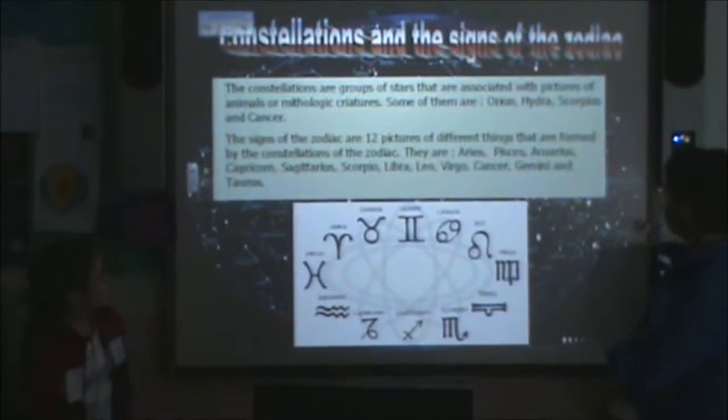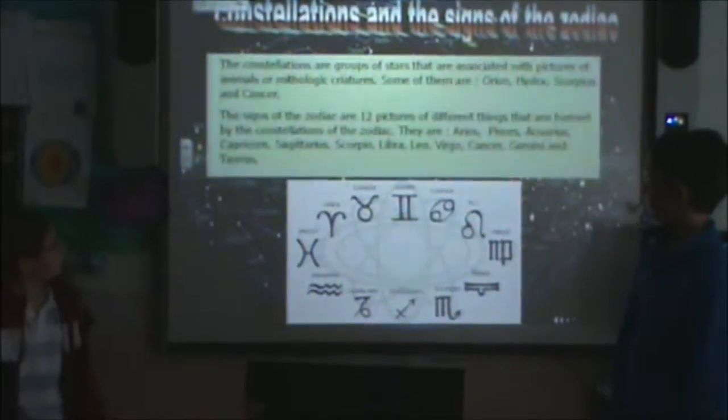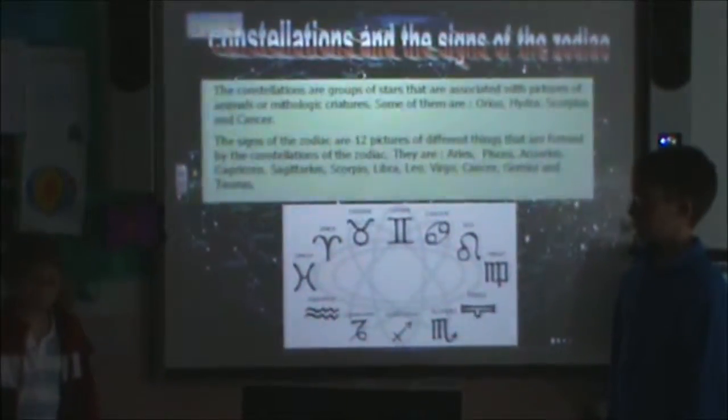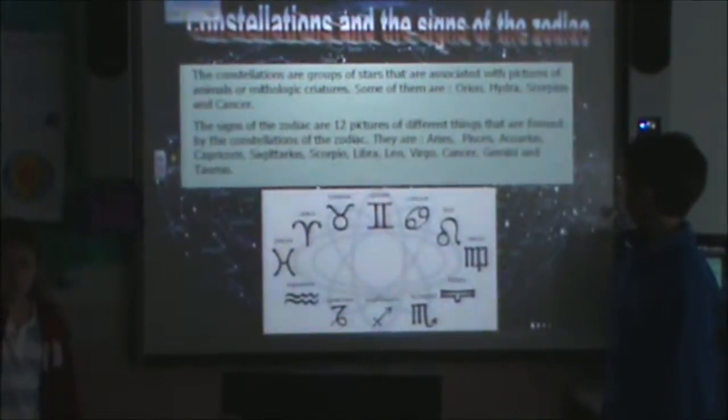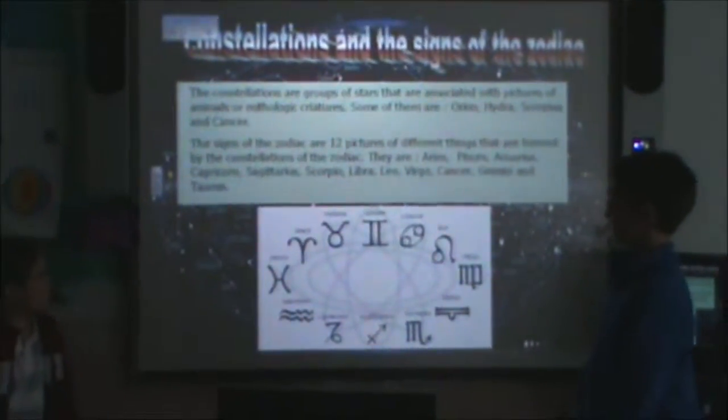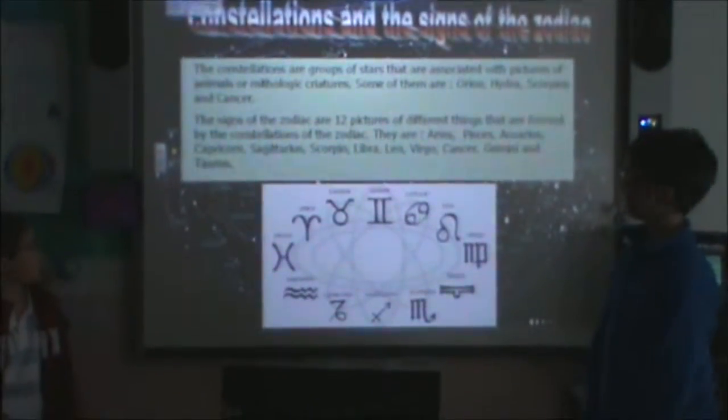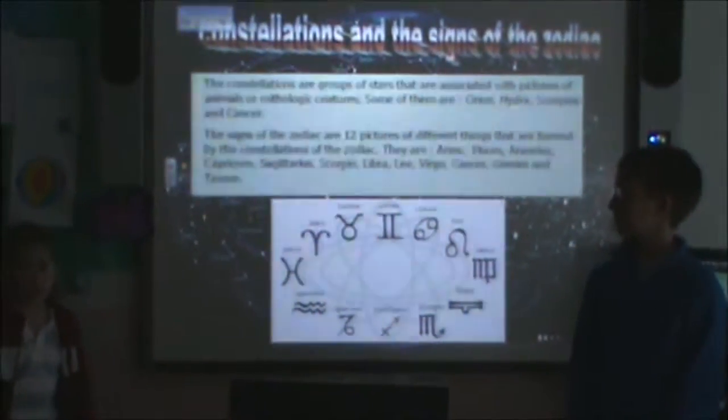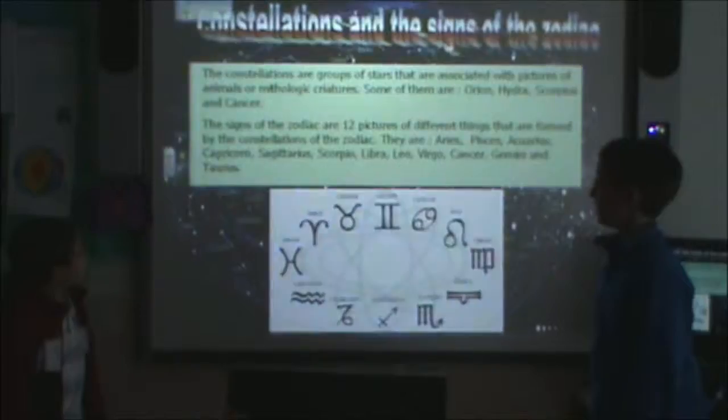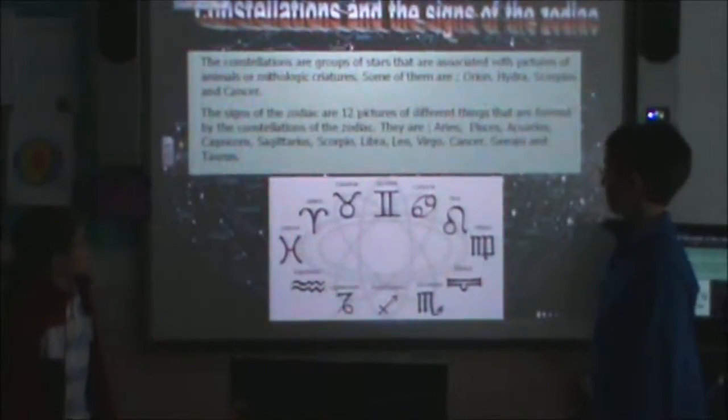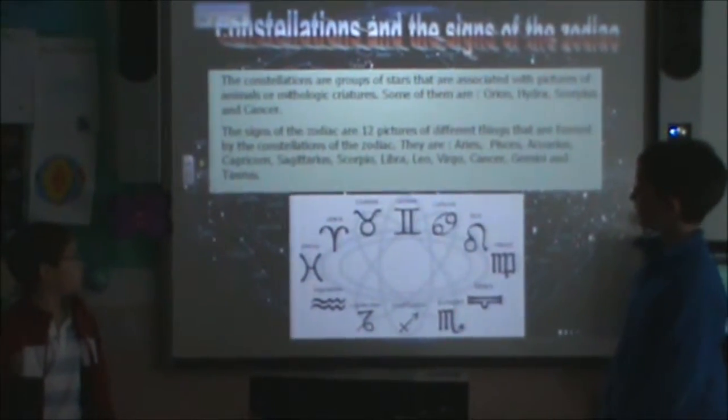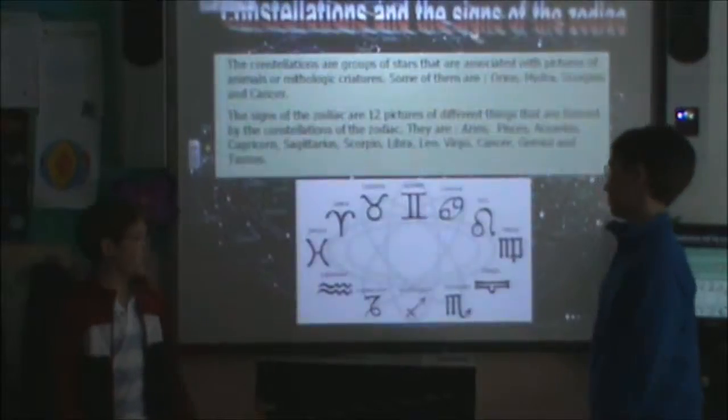Constellations and the signs of the zodiac. The constellations are groups of stars that are associated with pictures of animals or mythological creatures. Some of them are Orion, Hydra, Scorpius, and Cancer. The signs of the zodiac are 12 pictures of different things that are formed by the constellations of the zodiac.